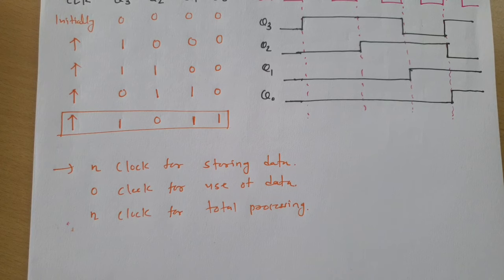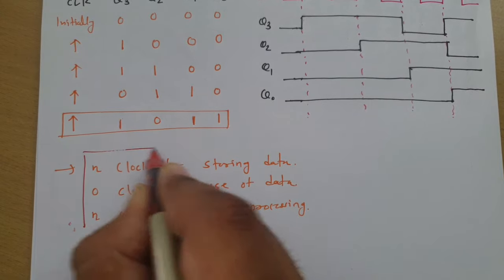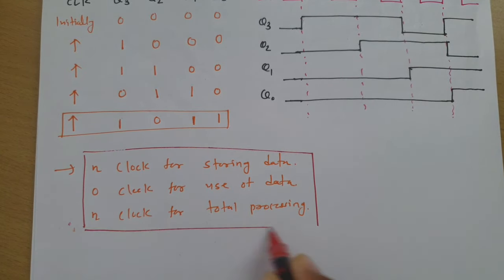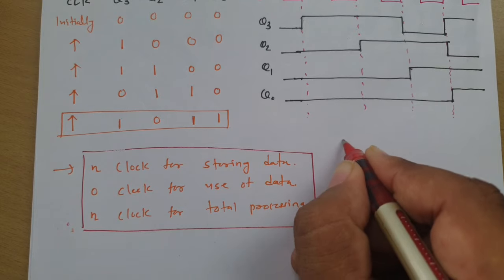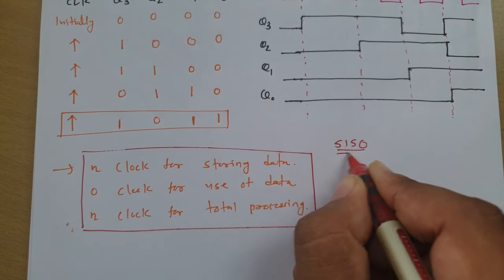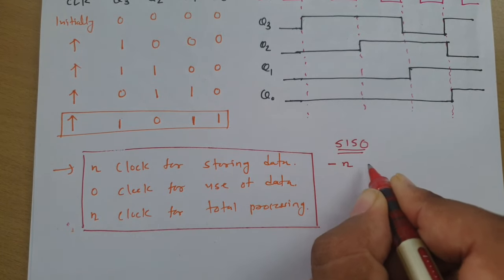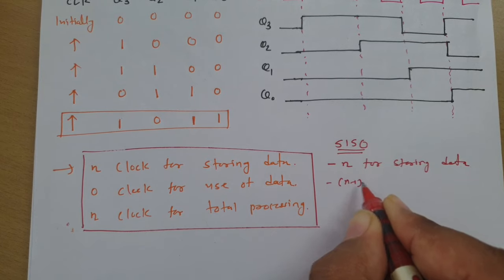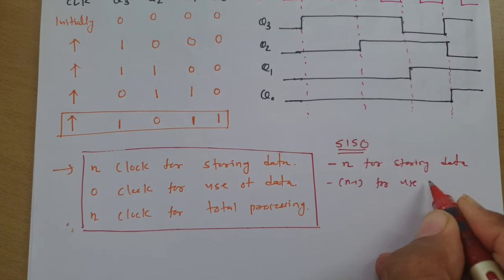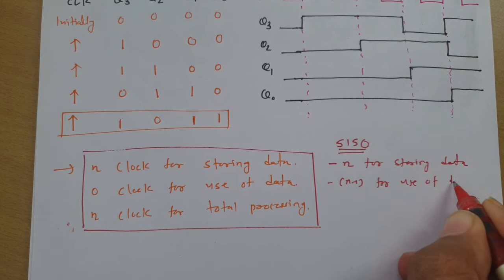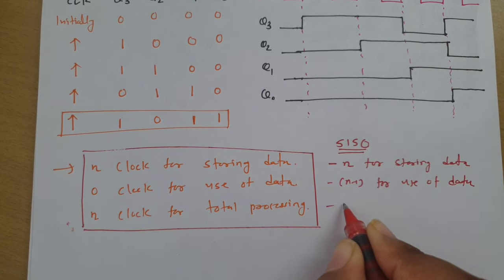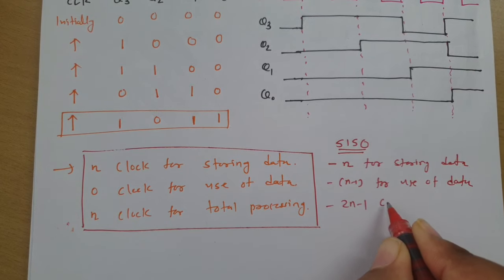Comparing Serial Input Parallel Output with Serial Input Serial Output: in SISO, we need N clocks for storing data and N minus 1 clocks for use of data, making 2N minus 1 total. In SIPO, only N clocks are needed for total processing. This is how SIPO is better compared to SISO.